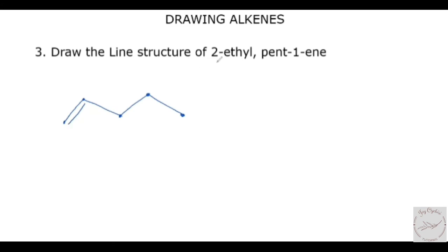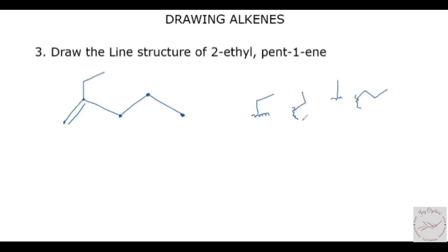The next thing is to look at the 2-ethyl part. The 2-ethyl is telling us that this is 1, this is 2 — on the second carbon, you have an ethyl group. Now an ethyl group in line structure is drawn this way. Whenever you draw an ethyl as a line structure, it will always be in this format — just one stroke. If it's propyl, you have two strokes joined together. They will always be attached to the parent chain wherever they are coming from. So we have our ethyl group attached at this end, giving us the 2-ethyl-pent-1-ene line structure.